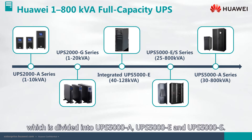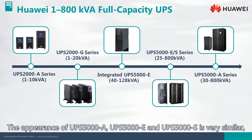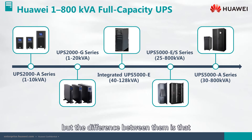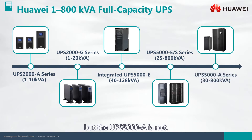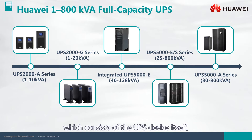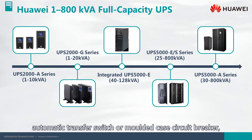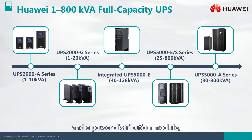The UPS 5000 series is divided into UPS 5000-A, UPS 5000-E, and UPS 5000-S. The appearance of UPS 5000-A, UPS 5000-E, and UPS 5000-S is very similar, but the difference is that the UPS 5000-E and UPS 5000-S are modular UPS devices while the UPS 5000-A is not. There is also the integrated UPS 5000-E, which consists of the UPS device itself, an automatic transfer switch or molded case circuit breaker, and a power distribution module.